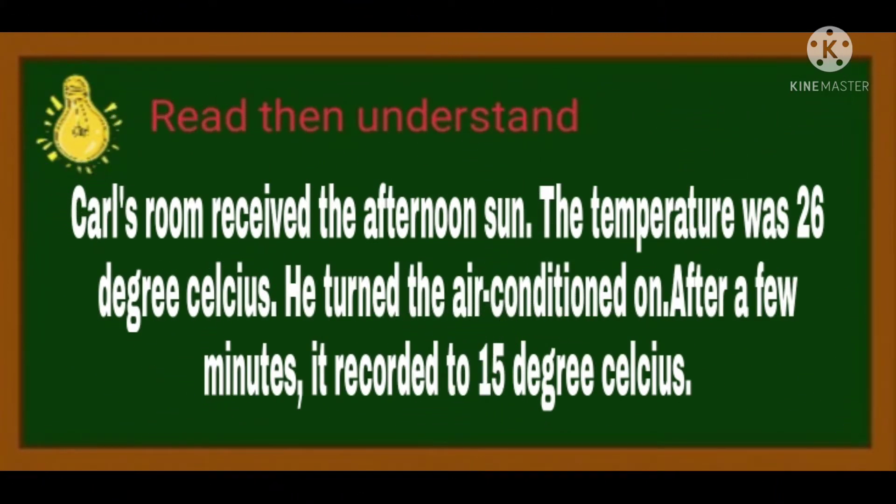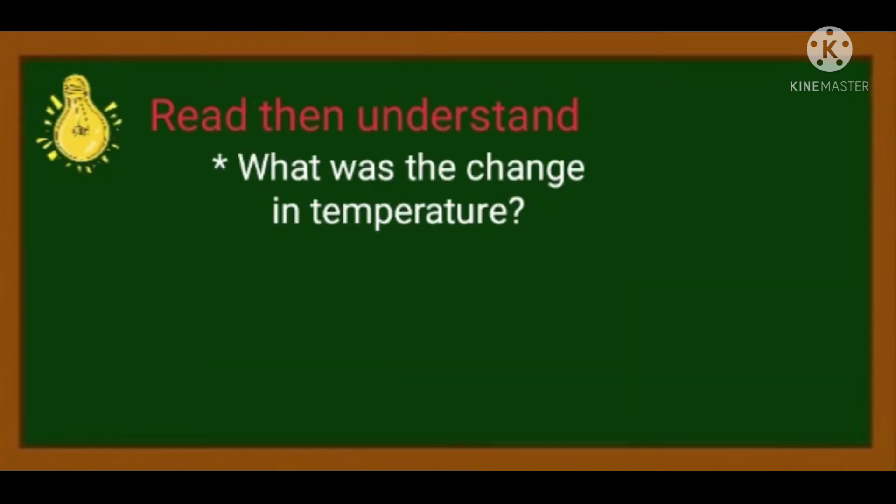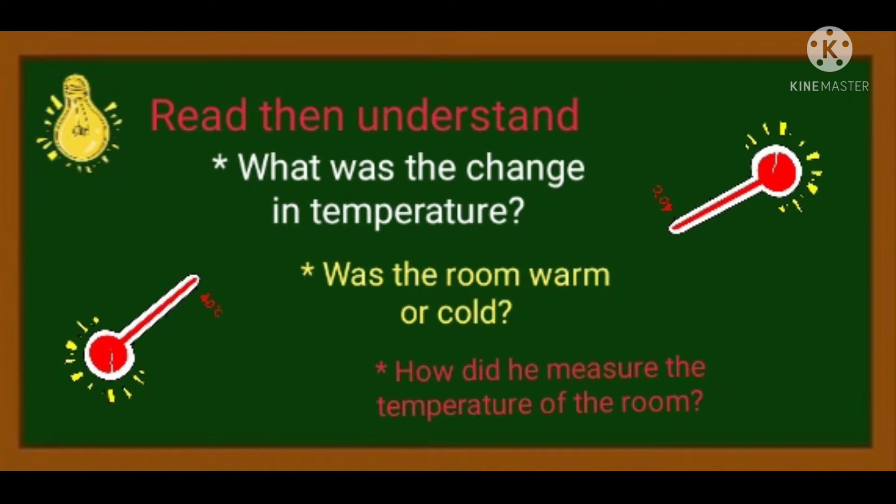Let us read then understand this problem. Carl's room received the afternoon sun. The temperature was 26 degrees celsius. He turned the air-conditioned on. After a few minutes, it recorded to 15 degrees celsius. What was the change in temperature? Was the room warm or cold? How did he measure the temperature of the room? To answer these questions, we are going to use a thermometer.